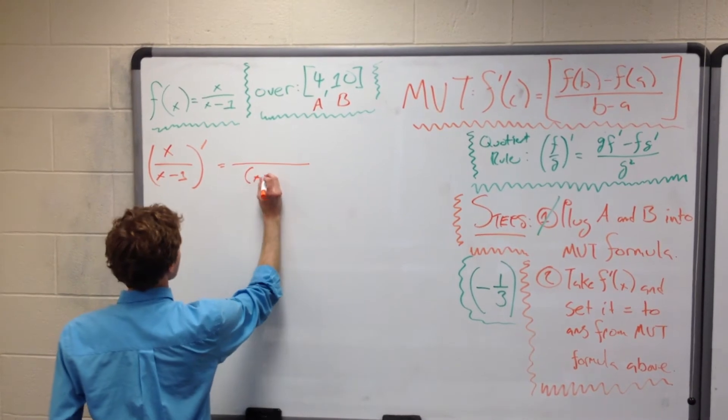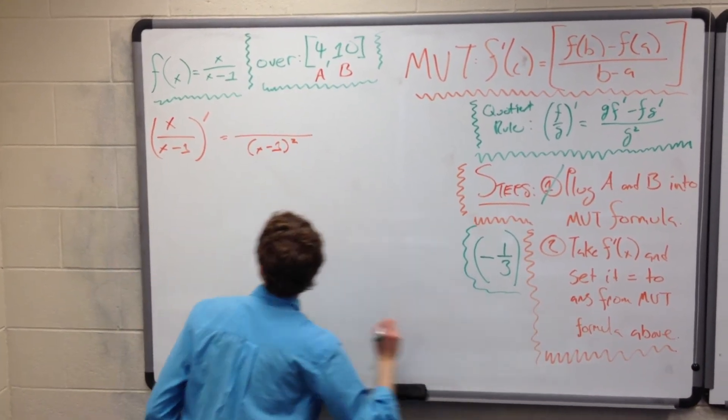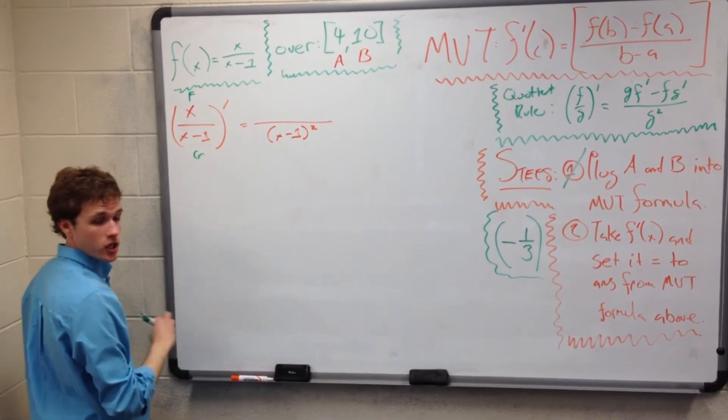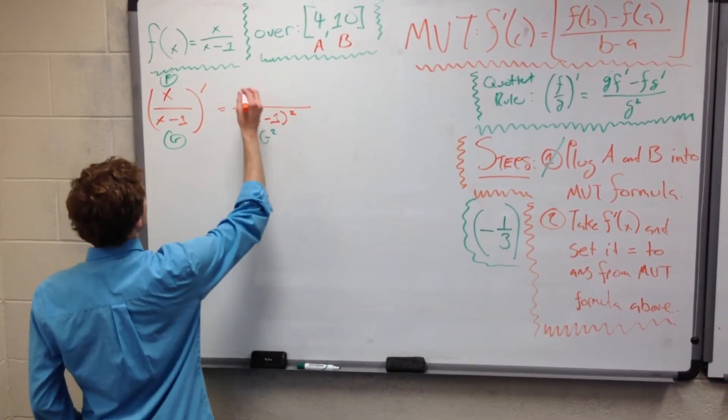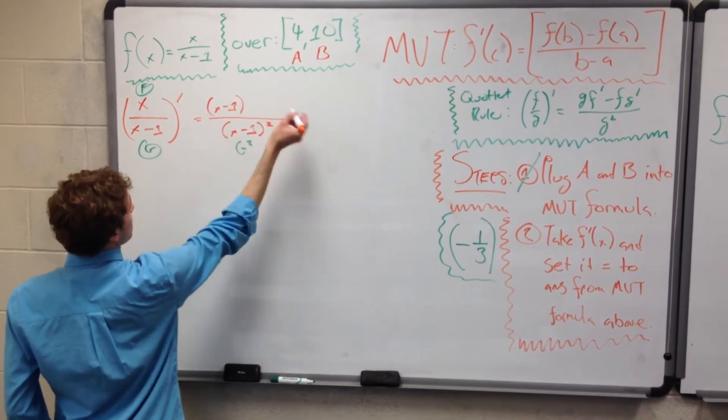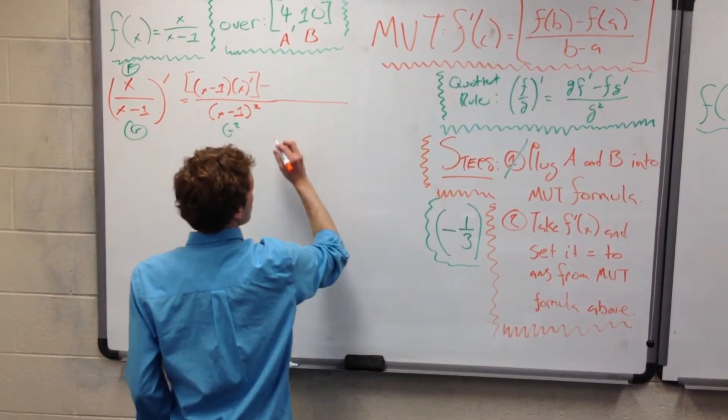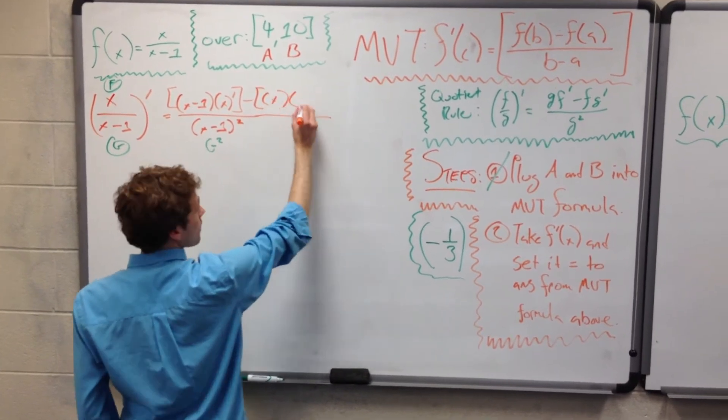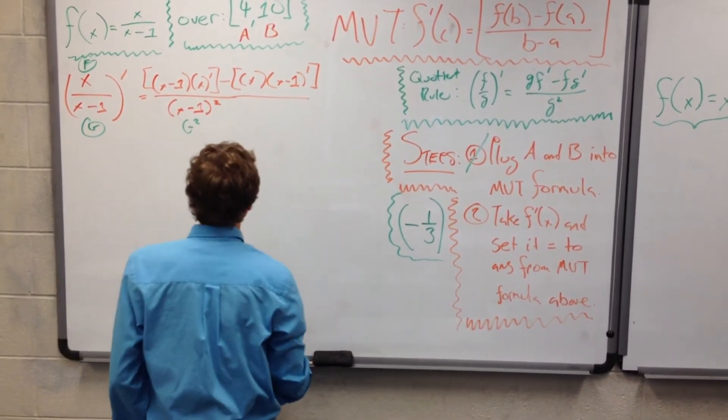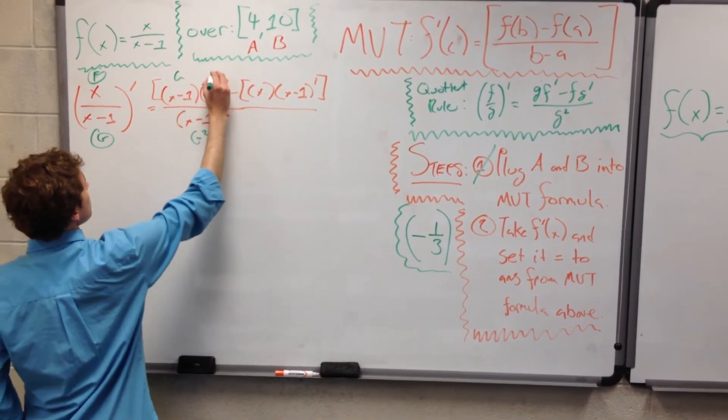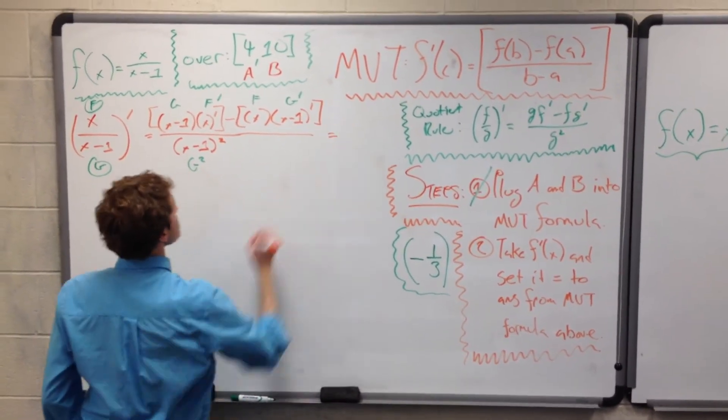Well, G squared is pretty easy, right? We have X minus 1 squared. And then G is this, this is F, this is G when we're talking about these things. So this is our G squared right here. And now we have G, X minus 1, times F prime, X prime, minus F, which is X, times G prime, which is X minus 1 prime. G, F prime, F, G prime.